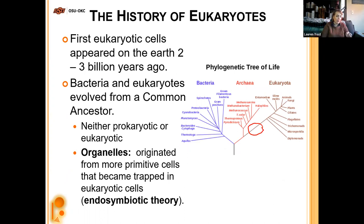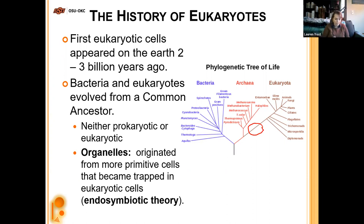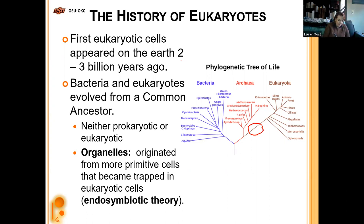Talking about the history of eukaryotes — where they came from in the timeline of life on Earth. Eukaryotes appeared about two to three billion years ago. Bacteria and eukaryotes seem to have evolved from a common ancestor that was neither prokaryotic nor eukaryotic. The development of organelles is what really separated eukaryotes from the other groups. The tree of life shows one progenitor cell that was the big daddy of all of them.